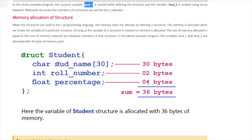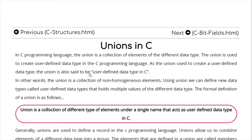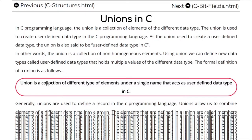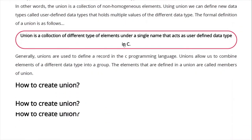So the total memory for stud1 is 30 + 2 + 4 = 36 bytes. That means when I declare a variable for this structure, 36 bytes of memory will be allocated. In a union it is different — we'll see how. The definition of union: a union is a collection of different types of elements under a single name that acts as a user-defined data type in C, same as structure.